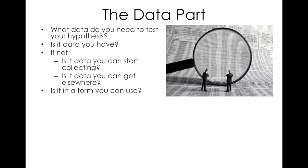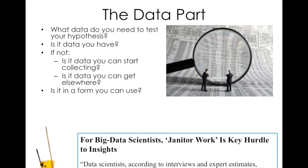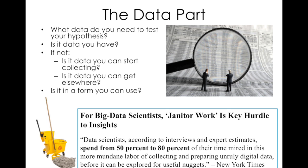Then comes the data part. What data do you need to test your hypothesis? It may be data that you already have, or data you don't already have. You need to ask yourself: is this data you can start collecting, or data you can get elsewhere, such as from public sources like data brokers or public data like the census? And is this data in a form that you can use? For big data scientists, janitor work is a key hurdle to insight, says the New York Times. Data scientists spend from 50 to 80% of their time collecting and preparing unruly data before it can be explored for useful nuggets.